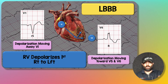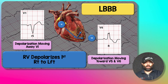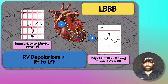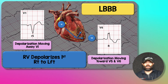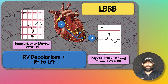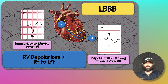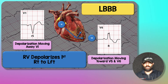Here's the heart conduction system with just V1 (septal) and V6 (lateral) shown. The blue arrows indicate the direction of conduction. In left bundle branch block the left bundle is blocked, so depolarization starts on the right side of the heart, works its way down, and moves to the left through the septum and apex. Because depolarization moves away from V1, you get a big S-wave in V1. As it moves down and over to the left, the terminal force moves toward V6, giving a big R-wave in V6.